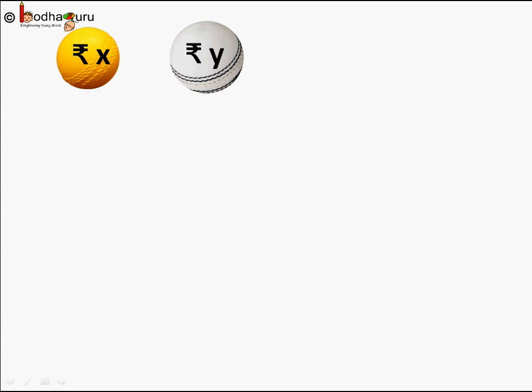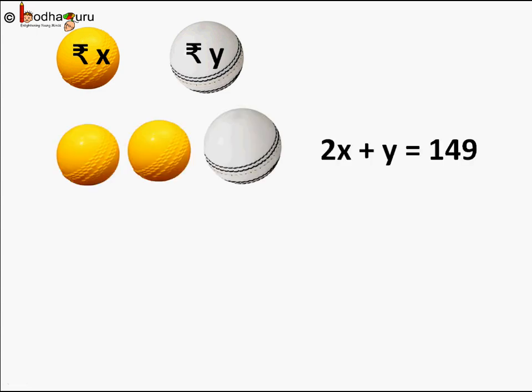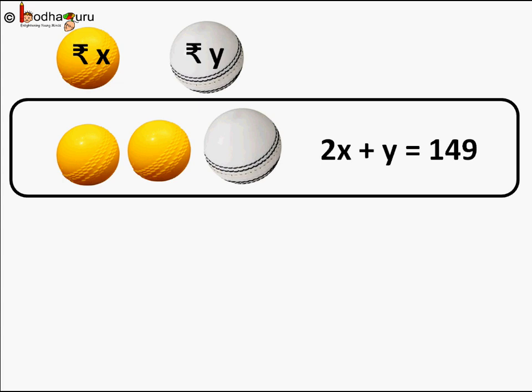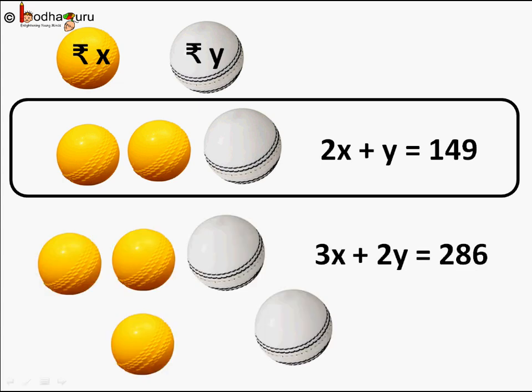Say the price of a yellow rubber ball is X rupees and the price of white leather ball is Y rupees. So in the first option, price of two yellow rubber balls, that is 2X, plus one white ball, that is Y rupees, should add up to 149 rupees.